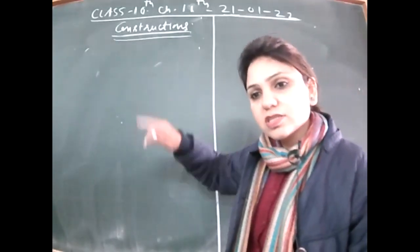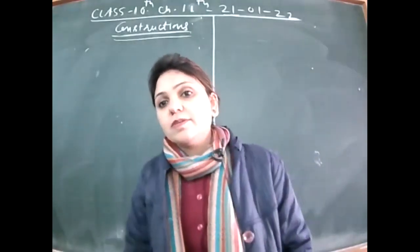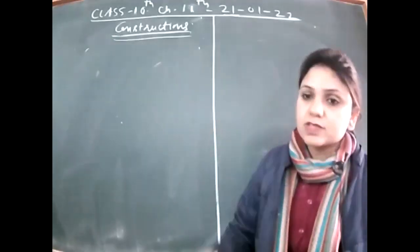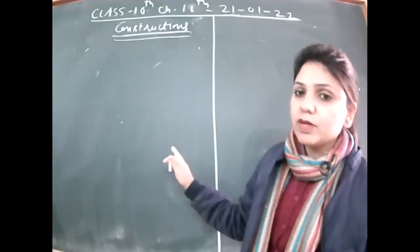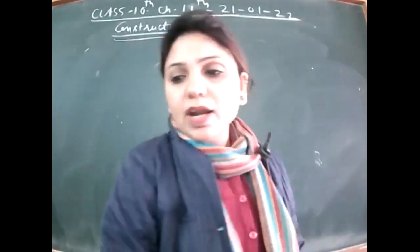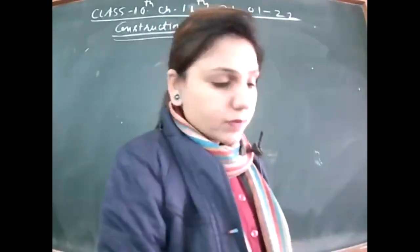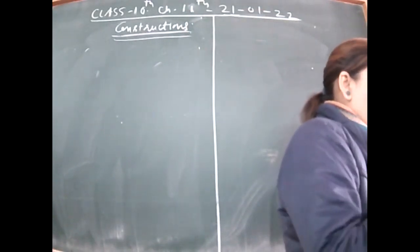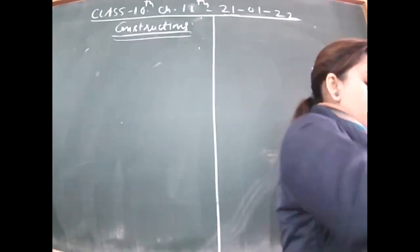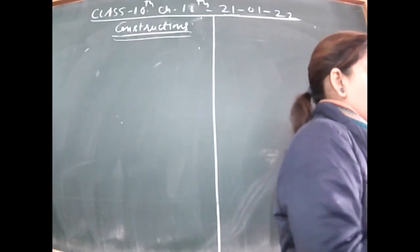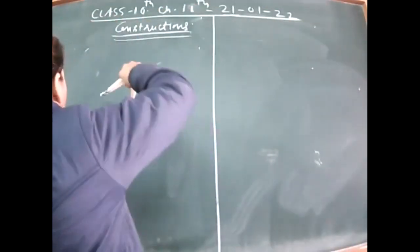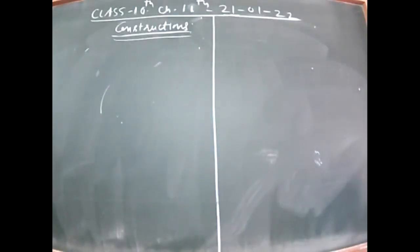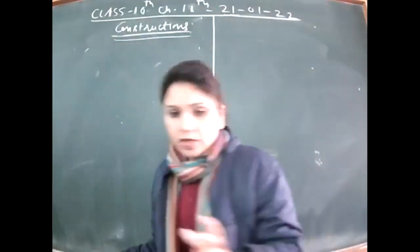In earlier classes we learned how to draw triangles. In this chapter we will see construction in a different way. The first new thing we are going to learn is how to divide a line segment in a particular ratio. This is the first topic of discussion in this chapter.